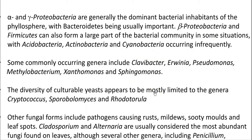Now we look at the details of the microbial flora present on the leaf surface, that is in the phyllosphere region. Alpha and gamma proteobacteria are generally the dominant bacterial inhabitants in the phyllosphere. Apart from that, Bacteroidetes are present. Beta proteobacterial members and Firmicutes can also form a larger part of the phyllosphere bacterial community. Sometimes, Acidobacteria, Actinobacteria, and Cyanobacteria were also occurring in the leaf system.